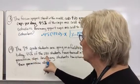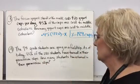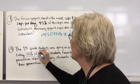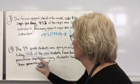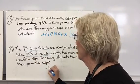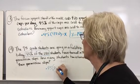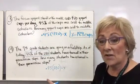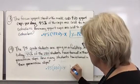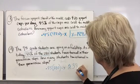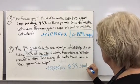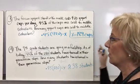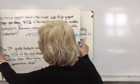The seventh grade class is going on a field trip. As of today, 85% of the 280 students have turned in their permission slips. How many students have turned in their permission slips? 85% of the 280 students — 280 is our total — so I can write this as 0.85 times 280, which gives me the number who have turned in slips. Putting this in the calculator: 238 students have so far turned in their permission slips out of the 280 total.